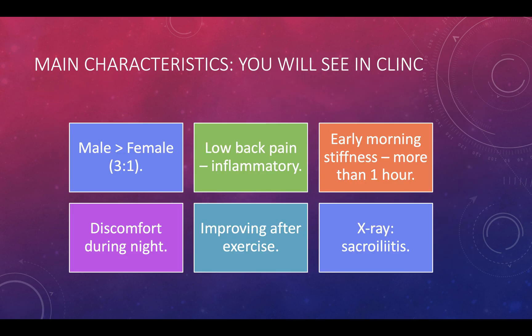Key characteristics seen in clinic: males are more commonly affected, whereas in rheumatoid arthritis females are more commonly affected. There is low back pain with early morning stiffness lasting more than one hour. As the patient moves and exercises throughout the day the pain improves. There is nocturnal discomfort and pain that improves after exercise.